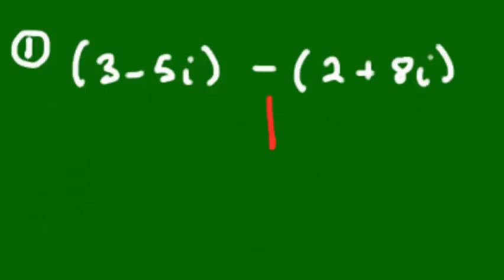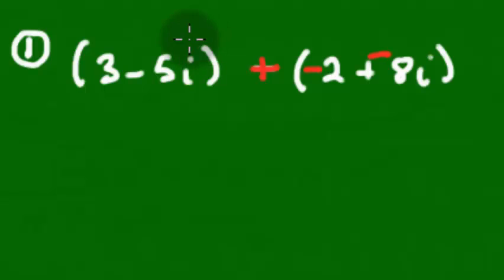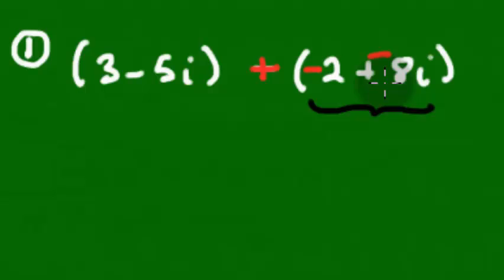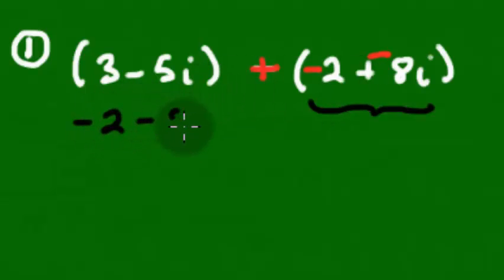When you do that, you'll see that the opposite of 2 gives you negative 2, and the opposite of 8 is negative 8. Once you've done that, this is no longer a subtraction sign — it is now an addition sign. We've done this before with integers, so you should be familiar with this procedure. Now, just like we dealt with polynomials, we're going to take this second complex number and put it underneath the first, lining up like terms. So the minus 2 goes underneath the 3, and the minus 8i goes underneath the negative 5i.